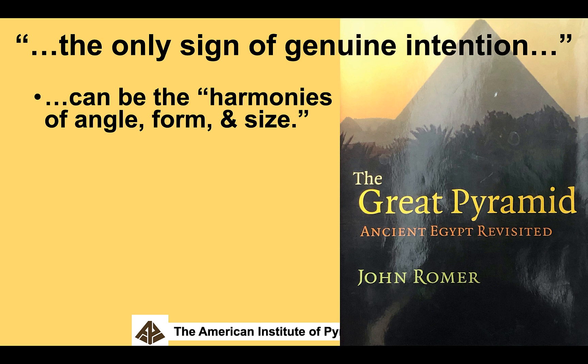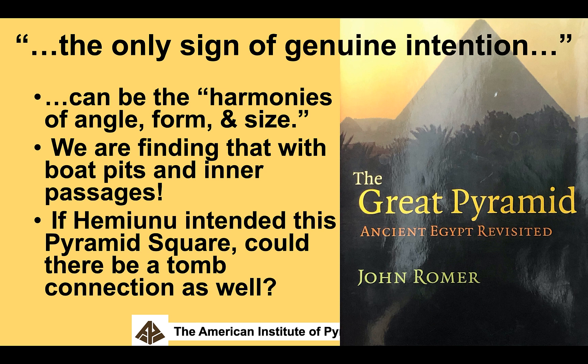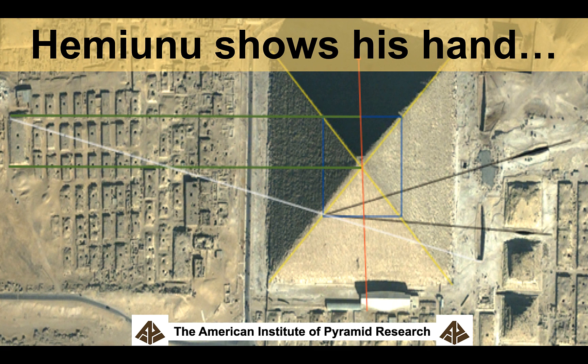John Romer writes: 'The only sign of genuine intention can be the harmonies of angle, form, and size.' I'd say we're finding exactly that with these boat pits and inner passages and this Great Pyramid square — that's intentional, Hemiunu did that. So if Hemiunu could do that with a pyramid square, could there be a tomb connection? Since Sefzada showed he encoded things in other ways, could there be a direct connection to his tomb?